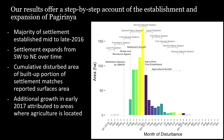Distilling those maps into a frequency and time graph gives a step-by-step account of the establishment and expansion of Pajrina over time, effective for understanding month by month how much settlement is changing, what's expanding where, and how different land covers can be attributed to this disturbance detection method.